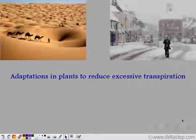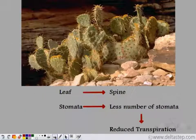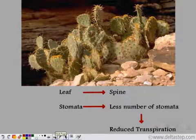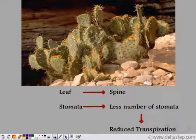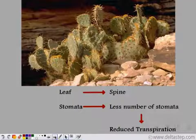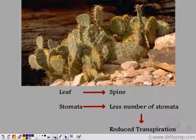Now, what are the various adaptations that these plants do? First of all, to reduce the rate of transpiration, the number of stomata has to be reduced. For that, xerophytic plants present in the deserts reduce their leaves into needle-like spines. If the leaf size decreases, there will be fewer stomata, so there will be reduced transpiration and maximum water will be retained in their body.